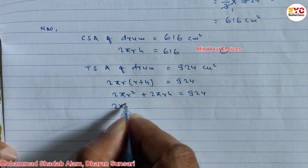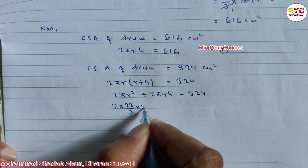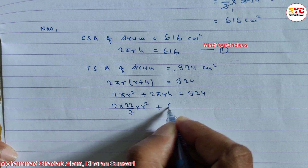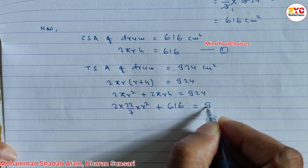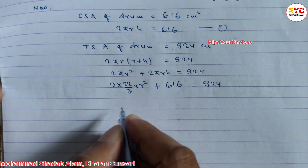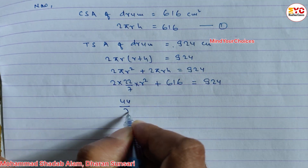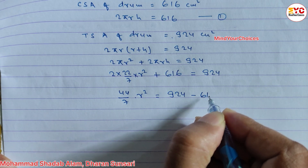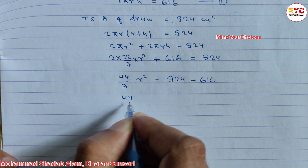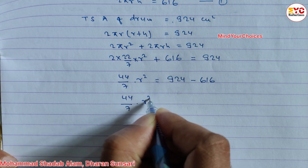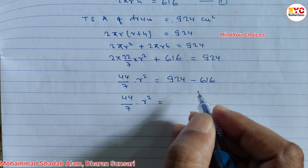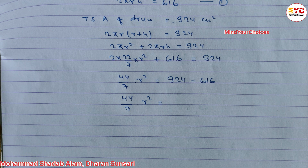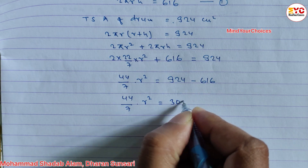Substituting the CSA value (2πrh = 616) into the expanded TSA equation: 2 × (22/7) × r² + 616 = 924. Therefore 44/7 × r² = 924 − 616 = 308.